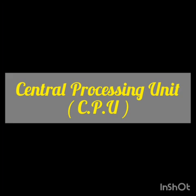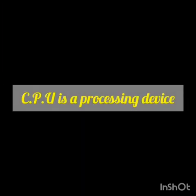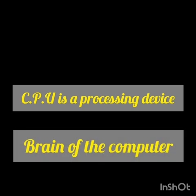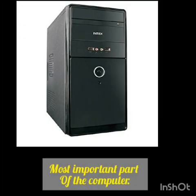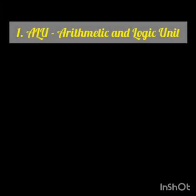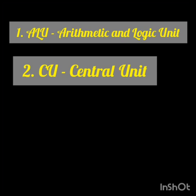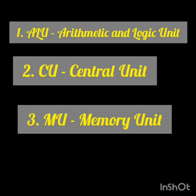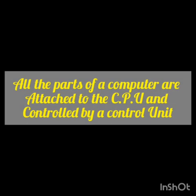The CPU — Central Processing Unit — is the processing device and is known as the brain of the computer. It is the most important part of the computer system. The CPU processes all the instructions given to the computer through input devices. It has three parts: first, the ALU — Arithmetic and Logic Unit; second, the CU — Control Unit; and third, the MU — Memory Unit. All parts of the computer are attached to the CPU and controlled by the control unit.